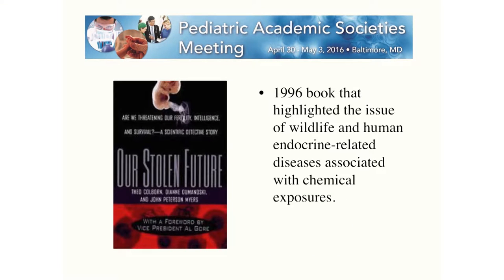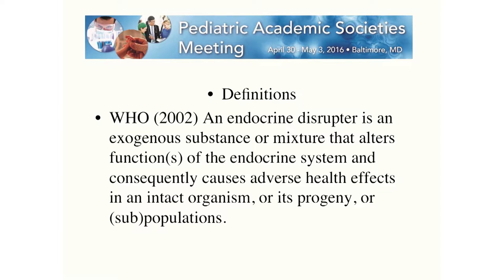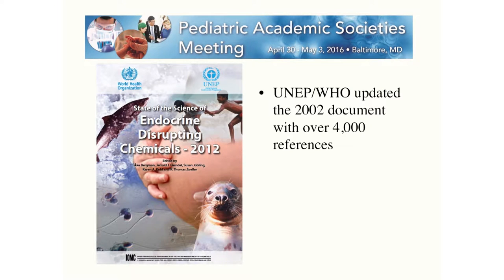The concept of endocrine disruption really became popular with the 1996 book, Our Stolen Future. It came at a good time historically, because Congress was enacting relevant legislation. As a result, a number of organizations have defined what an endocrine disruptor is. The World Health Organization in 2002 defined it as an exogenous substance or mixture that alters functions of the endocrine system and consequently causes adverse health effects. The Endocrine Society refined this by saying it's a chemical or mixture that interferes with hormone action.